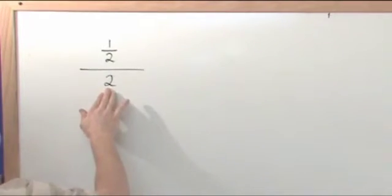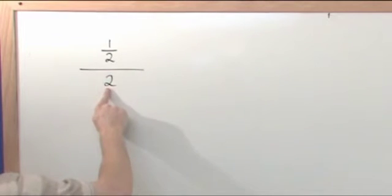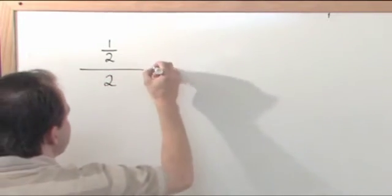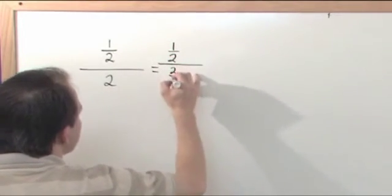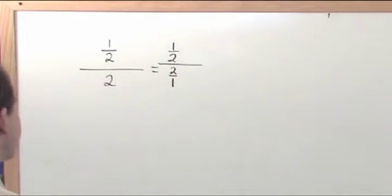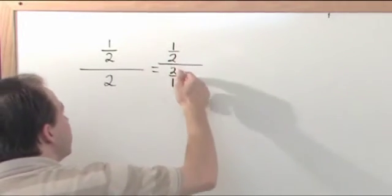Here we have a two on the bottom and we're dividing by two. Okay, so this two I want to make it into a fraction because then it's going to be easy. So I'm going to have one half divided by two over one. That's what I'm doing. One half divided by two over one.